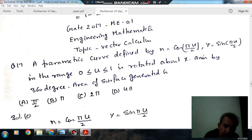Hello, welcome again. We are solving some questions of engineering mathematics. The topic is vector calculus, question number 17 from Gate 2017 ME-01. The parametric curve is defined by x = cos(πu/2), y...